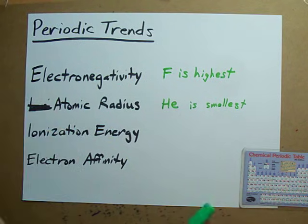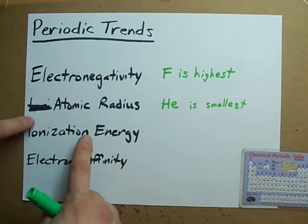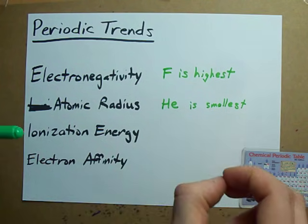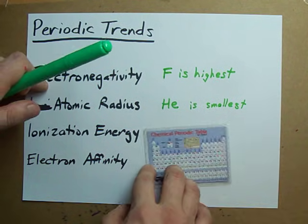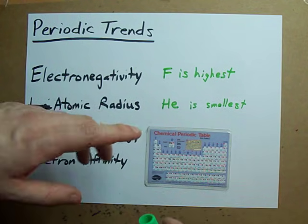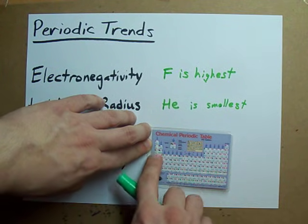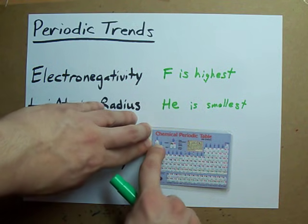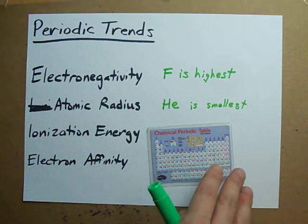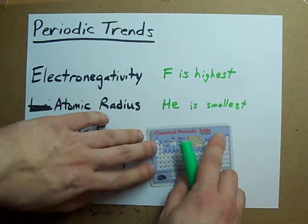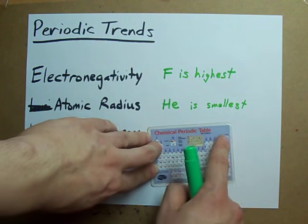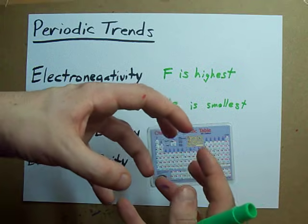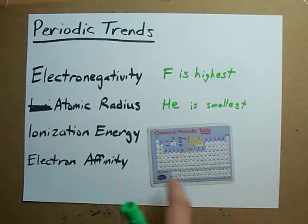Ionization energy can be trickier. Remember, ionization energy is the amount of energy it takes to remove an electron. Which atoms really want to give up electrons? These ones — it's not going to take a whole lot of energy for these to get ionized. Which atoms don't want to lose an electron? Definitely the noble gases, because they already have a full outer shell. And even the halogens, because if anything, they want to gain an electron to have that full outer shell — the last thing they want to do is give it up.